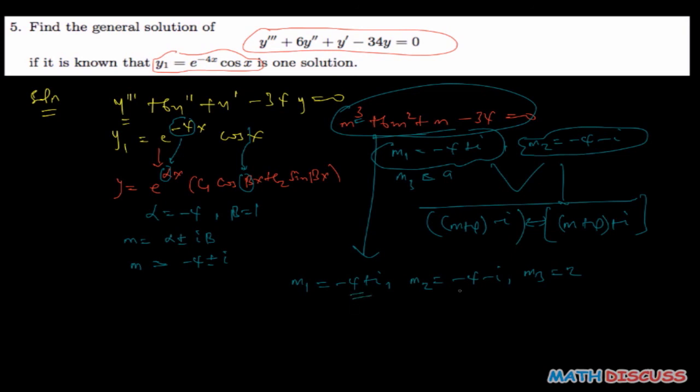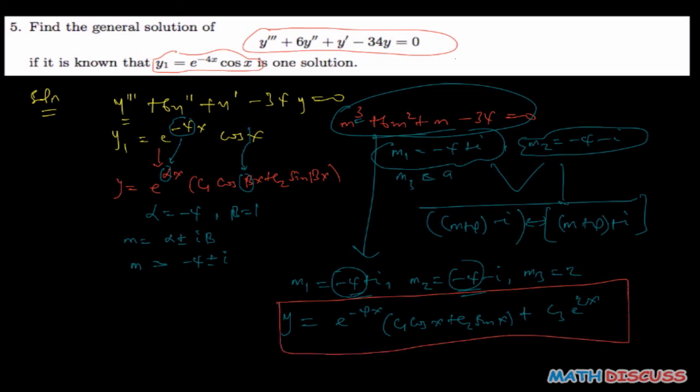Now based on this, our solution is going to be y = e^(-4x)(c₁cos(1x) + c₂sin(1x)) + c₃e^(2x). Now that is the general solution of the differential equation that we're given.